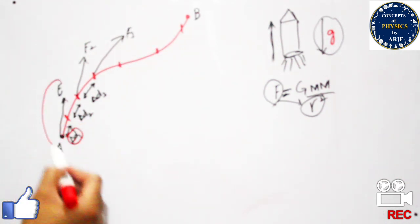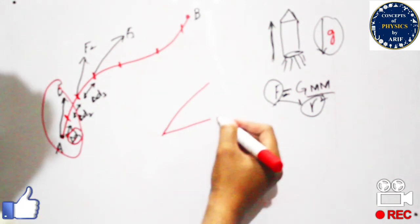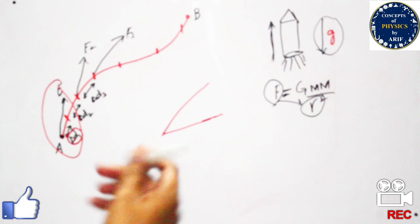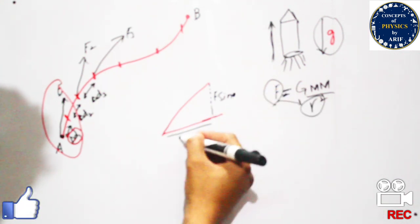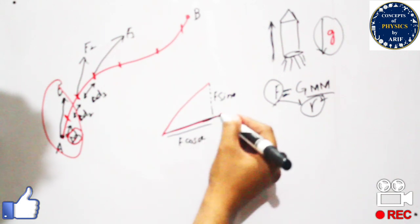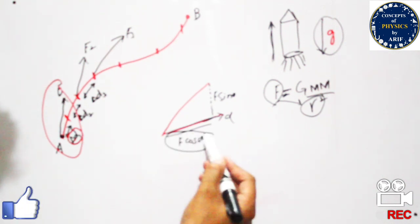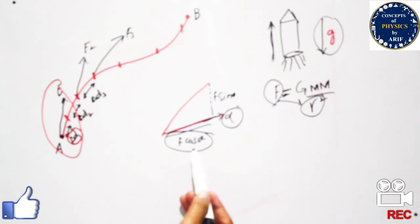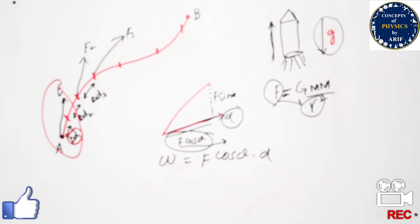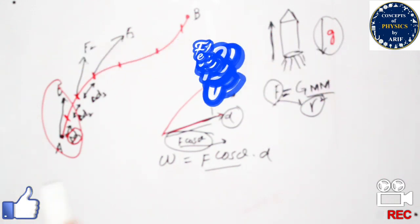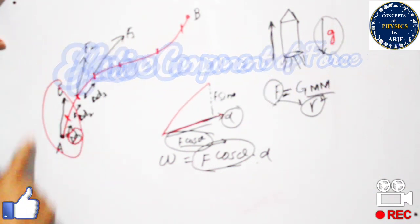We will take one case where force is applied in one direction and displacement is in another direction. We resolve the force into rectangular components: one component is F·sinθ and the other is F·cosθ. The displacement direction is along F·cosθ, so as previously mentioned, the only effective component is F·cosθ with respect to displacement, because F·cosθ is along the direction of displacement.